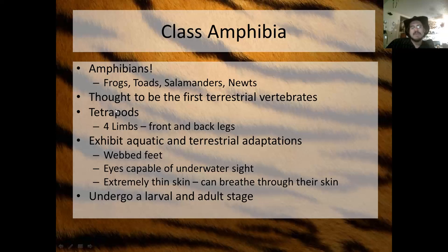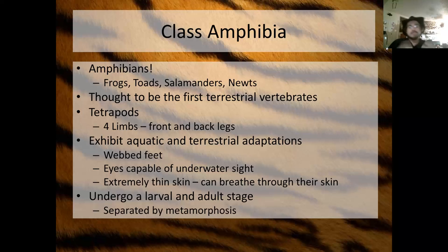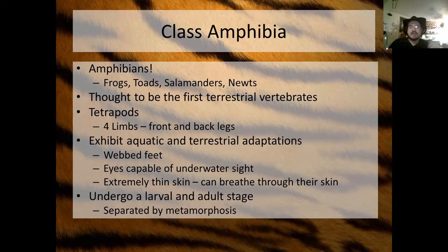What's cool about amphibians is that they're the only vertebrates that undergo a larval and adult stage. Their larval stage is what everybody refers to as the tadpole. Frogs, toads, salamanders, and newts all have a larval stage. In frogs and toads we call it the tadpole — it's purely aquatic, has a tail, a big head, and it swims around eating algae or tiny aquatic invertebrates.